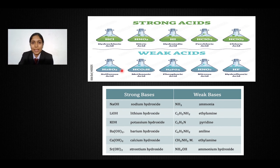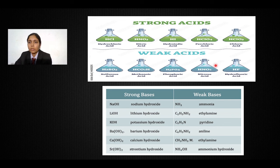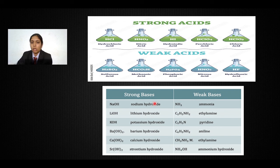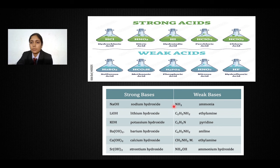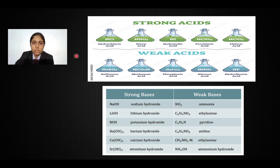Strong acids have a pH of 0 to 7 but produce more H⁺ ions. Examples include hydrochloric acid, nitric acid, hydroiodic acid, perchloric acid, and chloric acid. Weak acids include sulfurous acid, methanoic acid, nitrous acid, hydrofluoric acid, and phosphoric acid. On the same basis, there are strong bases and weak bases. Strong bases have pH near 14 and produce more OH⁻ ions — like NaOH, LiOH, KOH — while weak bases produce less OH⁻. The best example of a strong acid is HCl, and the most well-known weak acid is CH₃COOH, which is acetic acid.